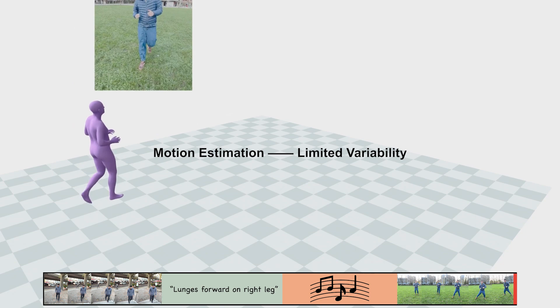This is because recovering accurate global human motion from a video with dynamic cameras is inherently an estimation task with limited variability.